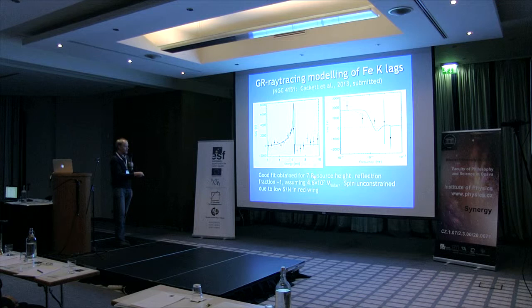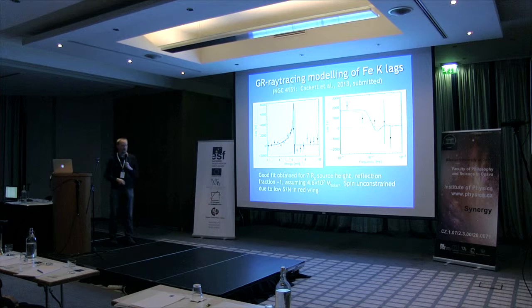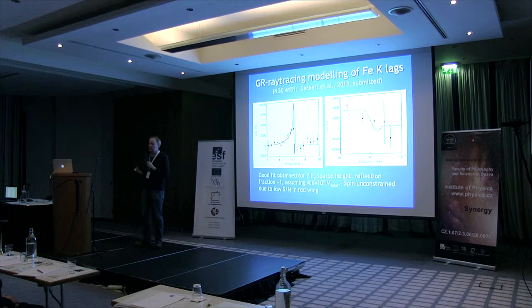It seems to work pretty well. The data isn't fantastic still - it's great that we can detect these iron line lags at all - but it gives consistent results that seem to make sense. There doesn't seem to be anything pathological about these fits: you get a seven gravitational radii source height, a reflective fraction of about one, giving the right covering fraction. It all works nicely with the known mass from reverberation mapping. You can fit the frequency dependence and energy dependence of the lags pretty well.